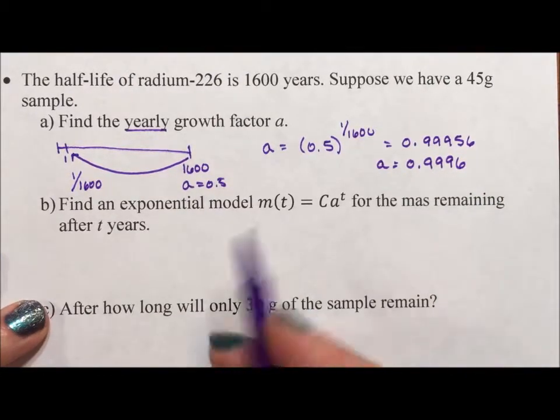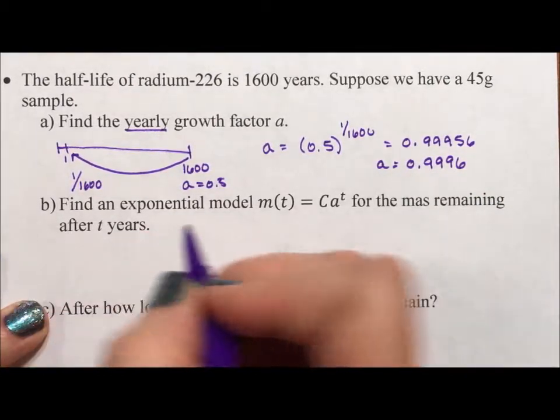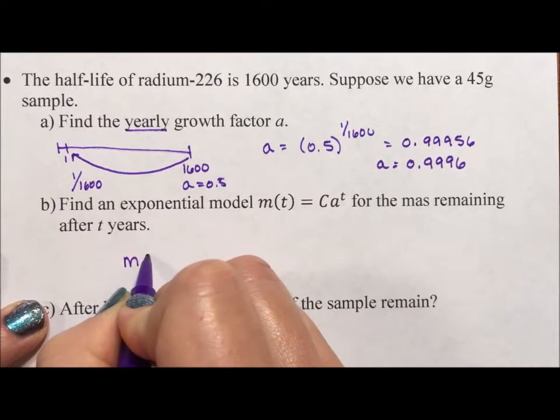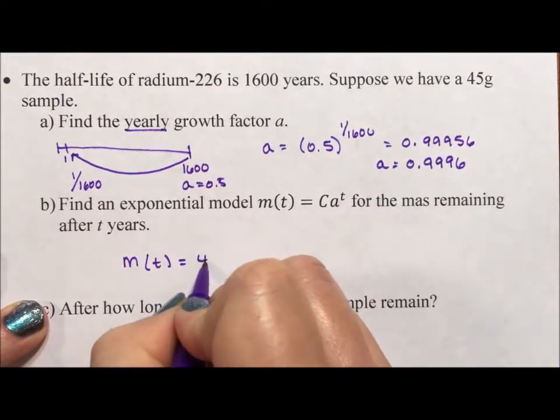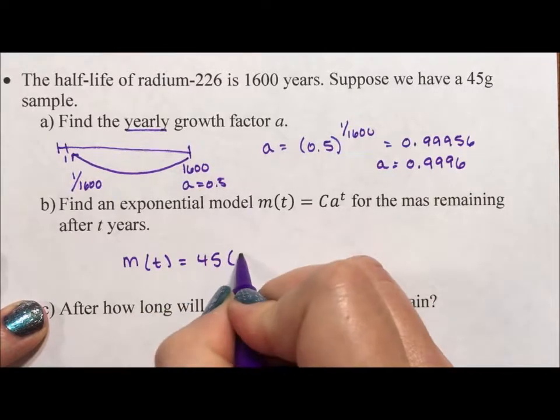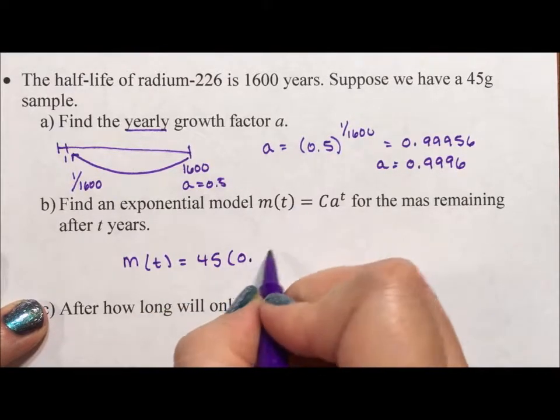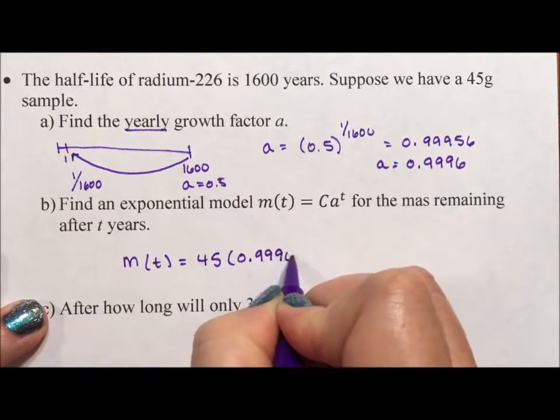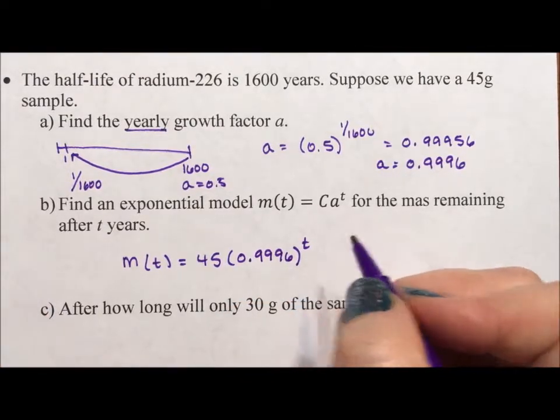Next it says, find an exponential model for the remainder after t years. So m(t), the initial is 45 grams. A, we just calculated as 0.9996 to the exponent t.